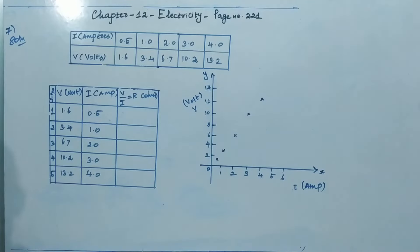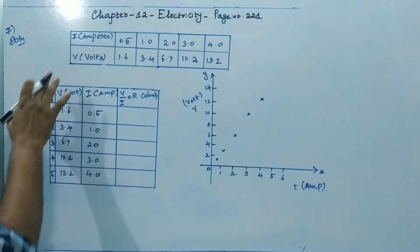Seventh exercise. The question is the value of current I flowing in a given resistor for the corresponding values of potential difference V across the resistor are given. The given I and V values.